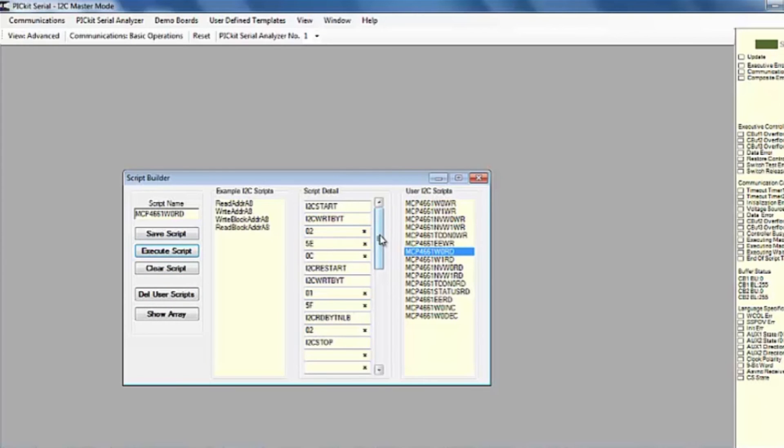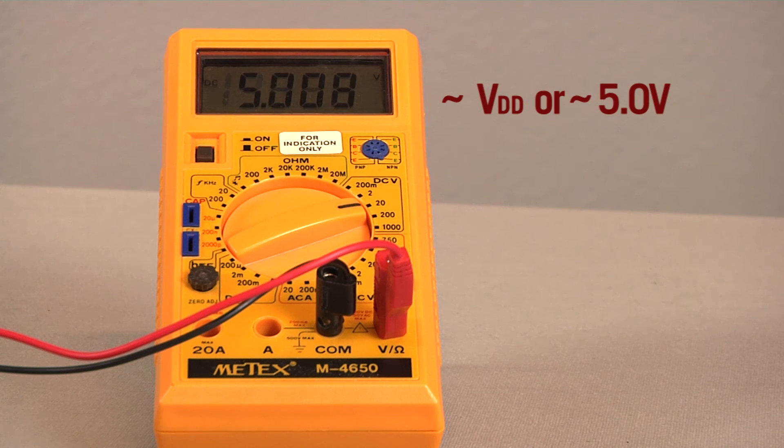Double click on the MCP4661W0WR script in the example I2CM script column. This loads the script detail column. Modify the fourth byte to FF. Click on the execute script button. This executes the script shown in the script detail column which will update the wiper value to FF hex. The wiper voltage will now be VDD.